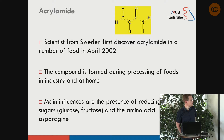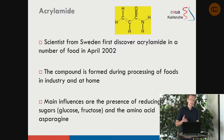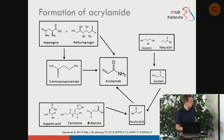Acrylamide is formed during processing of foods in industry but also at home — if you bake or fry something at home, acrylamide is also formed. The main influences are the presence of reducing sugars and the amino acid asparagine. These sugars and amino acids are also found in green coffee beans, so acrylamide is also formed during roasting. There are several pathways for acrylamide formation; it's not a univariate process.